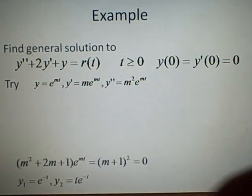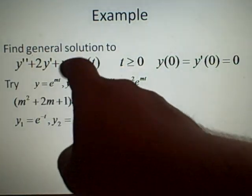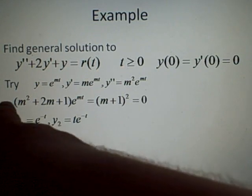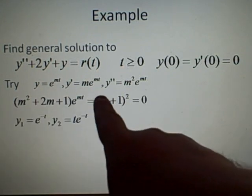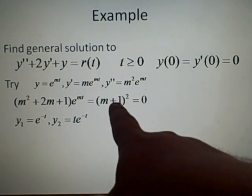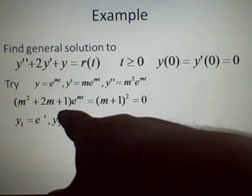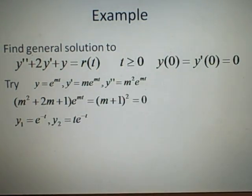And once you've solved this, so we differentiate each of these, put them into here. Remember, we're letting it equal 0 now to be homogeneous. We'll get given here, which is (m+1) squared, which is a double root. So we know one of our solutions is e to the minus t. And the second one, because it's a double root, is te to the minus t.